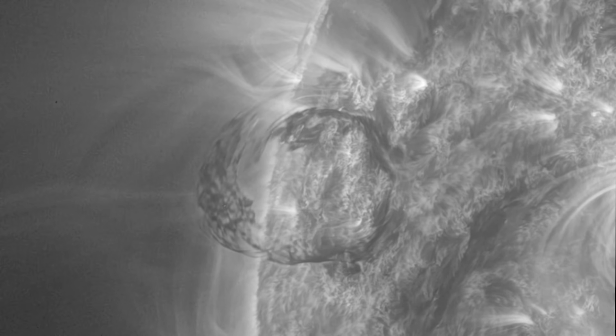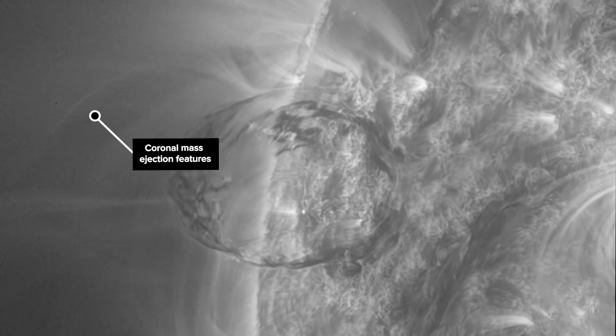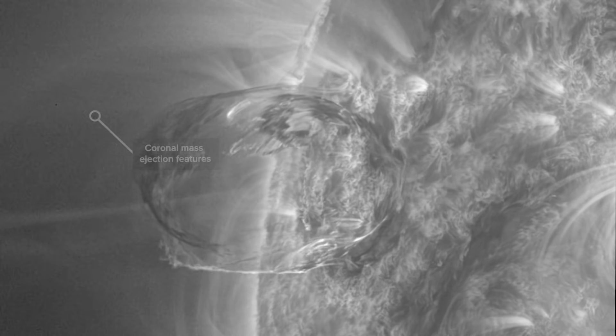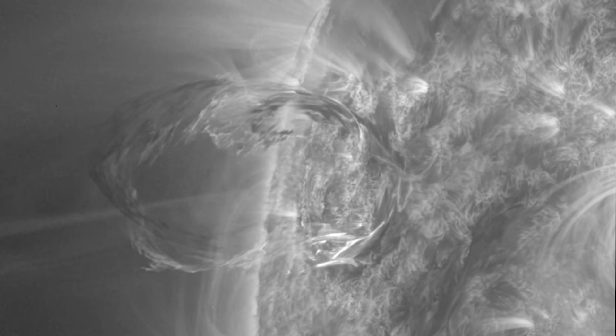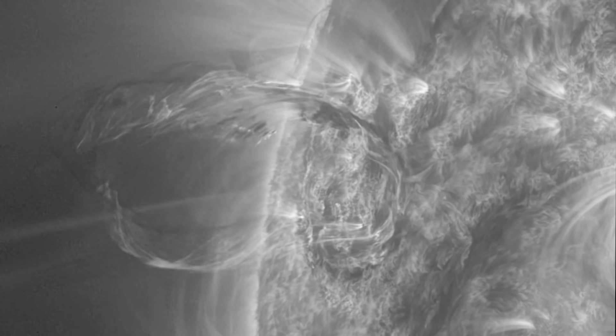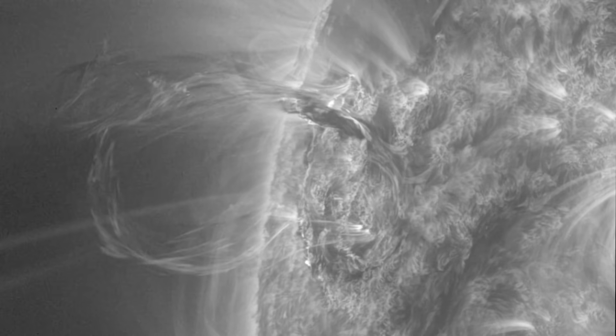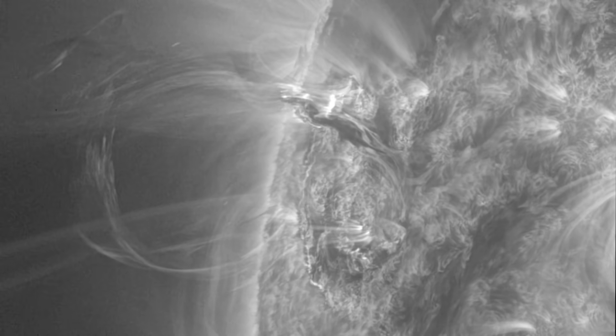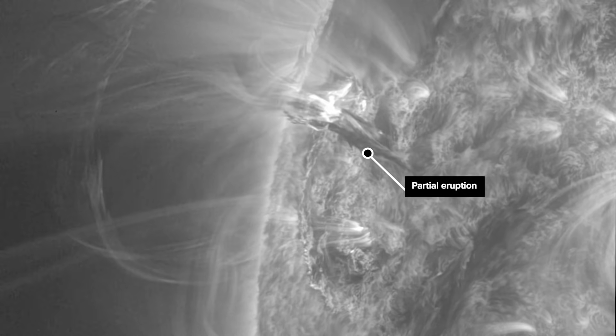The main eruption was too big to be a jet, but too narrow to be a coronal mass ejection. A second cooler layer of material on the surface of the Sun also started to erupt about a half an hour later, but it fell back down as a partial solar eruption.